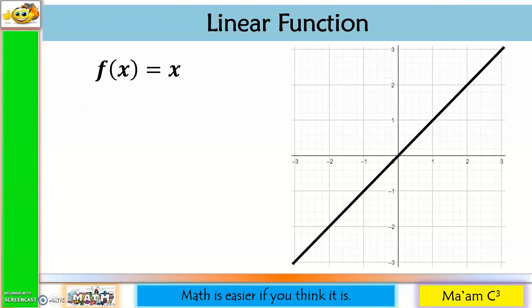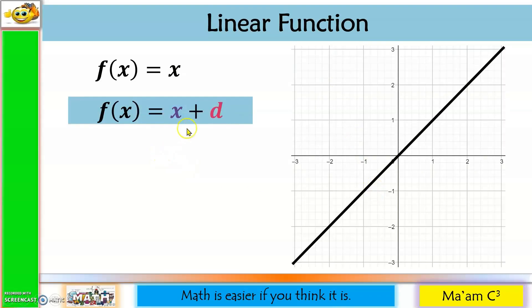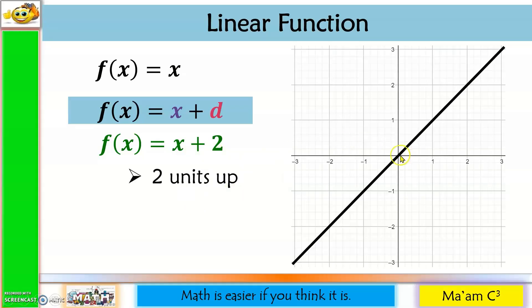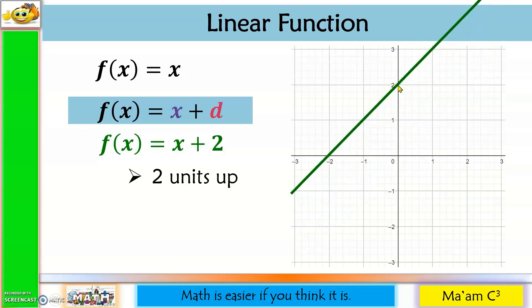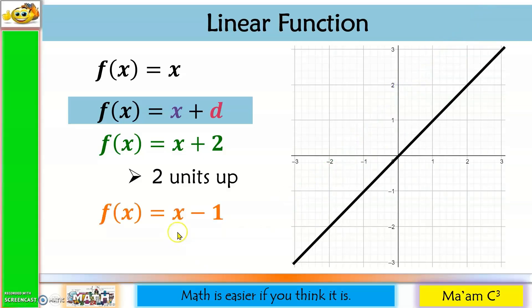For the linear function, you already know the parent function and its graph. Applying transformation: f(x) = x + 2 — adding +2 moves the graph 2 units up. It passes through (0, 0), so it will now pass through (0, 2). Another example: f(x) = x - 1 moves the graph 1 unit down, so it passes through (0, -1).